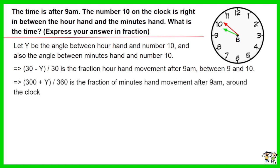300 plus y, divided by 360, is the fraction of minutes hand movement after 9am around the clock.